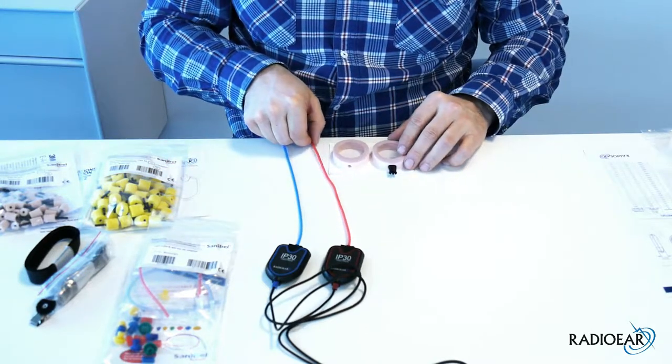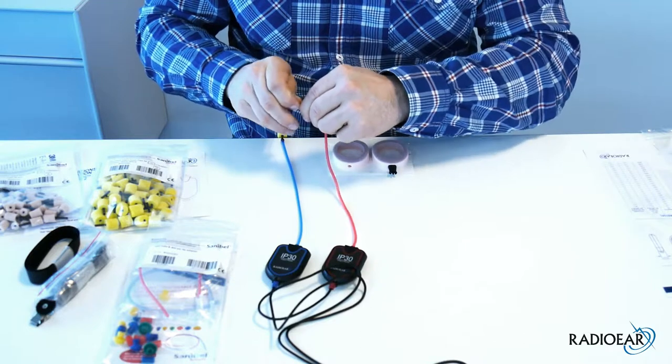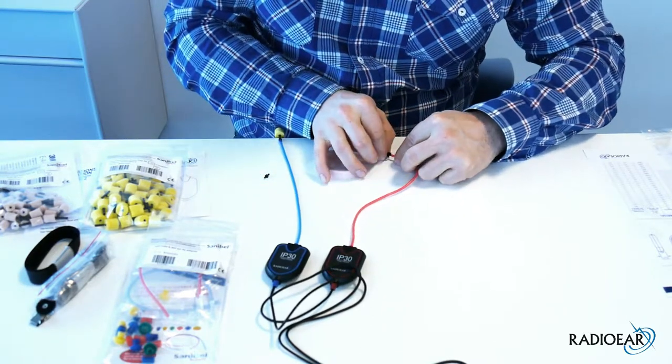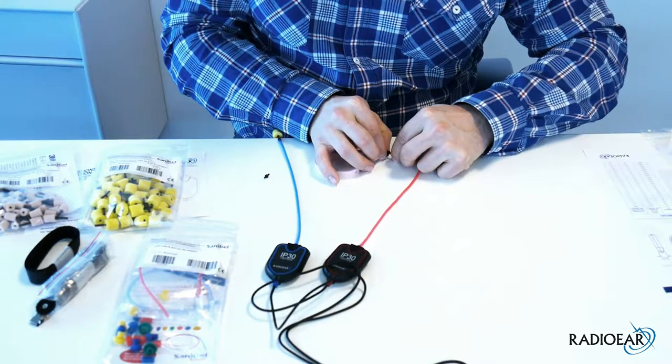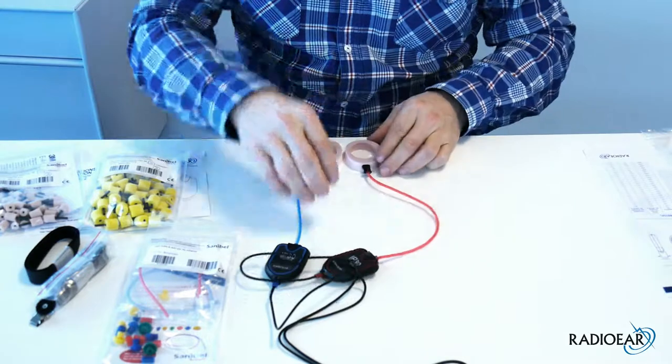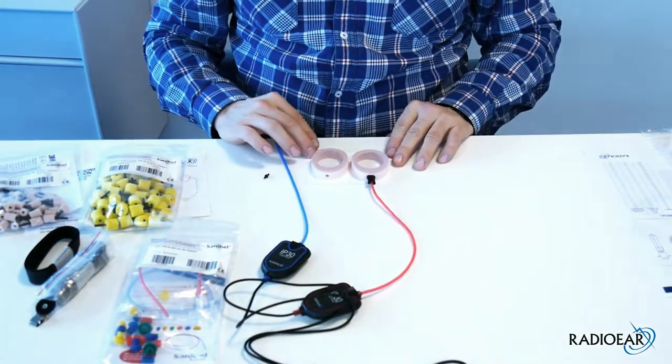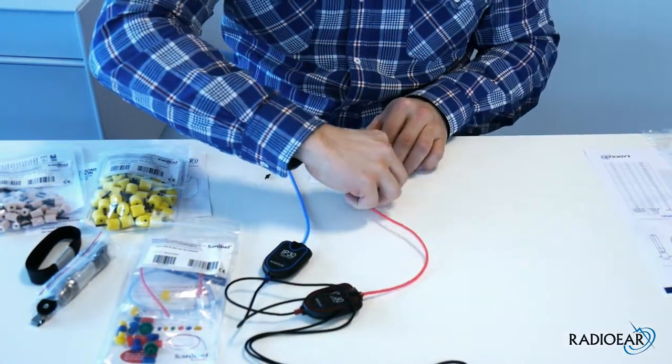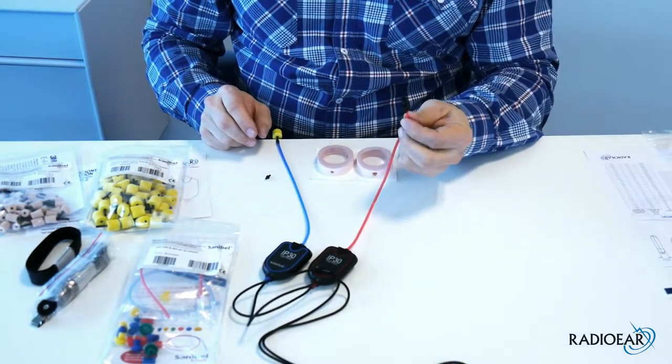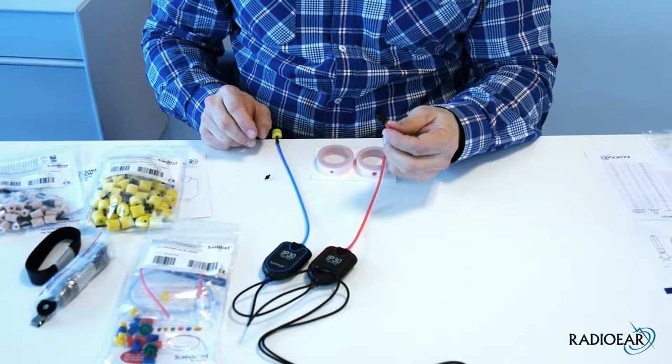In practice, you simply swap this piece here with this one. When you use it like this, you'll have it sitting like this. Now your IP30 insert phone is converted to be used with the ear cups.